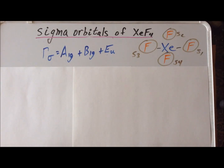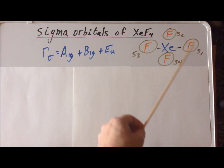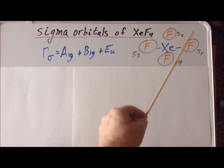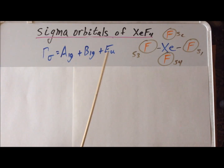Hello. In this video, we are going to finish up deriving the sigma orbitals for xenon tetrafluoride. We'll remind ourselves with a quick sketch of our molecule and the group orbitals on fluorine, which are here represented as s orbitals, but which we'll see from energy considerations are p orbitals, labeled as s1 through s4. We also know from the previous section that we were able to generate a reducible representation for the sigma bonding, gamma sigma, and we found by reduction that it was a linear combination of three different irreducible representations: A1g, B1g, and Eu.